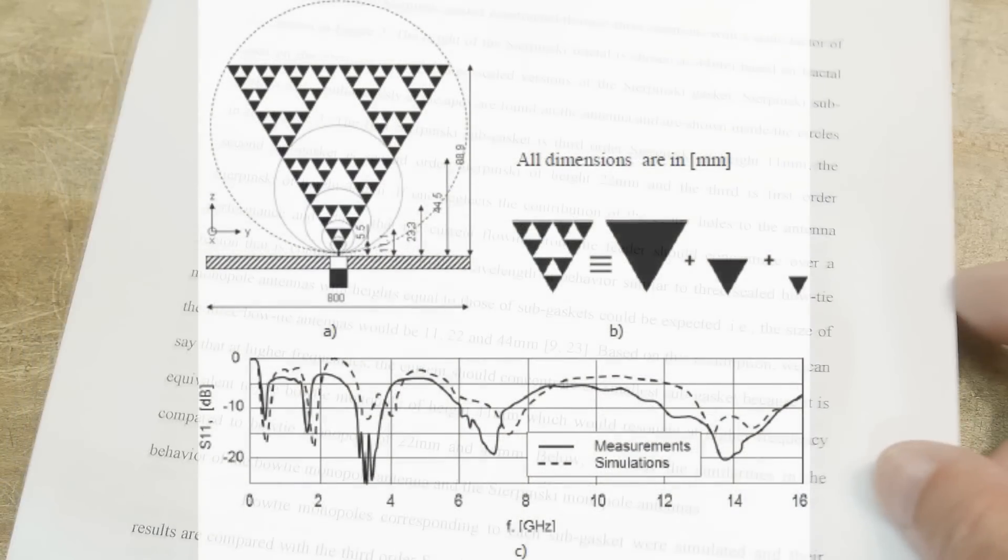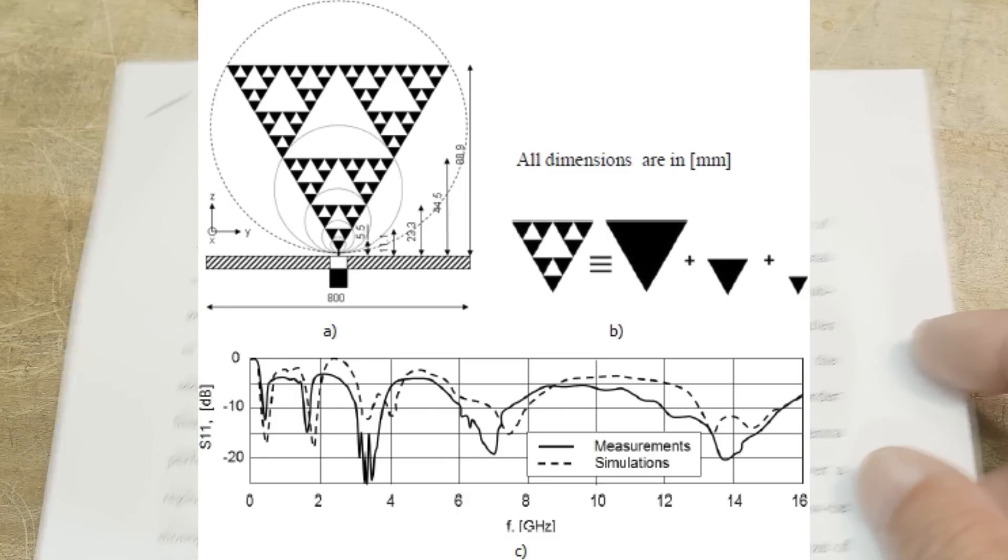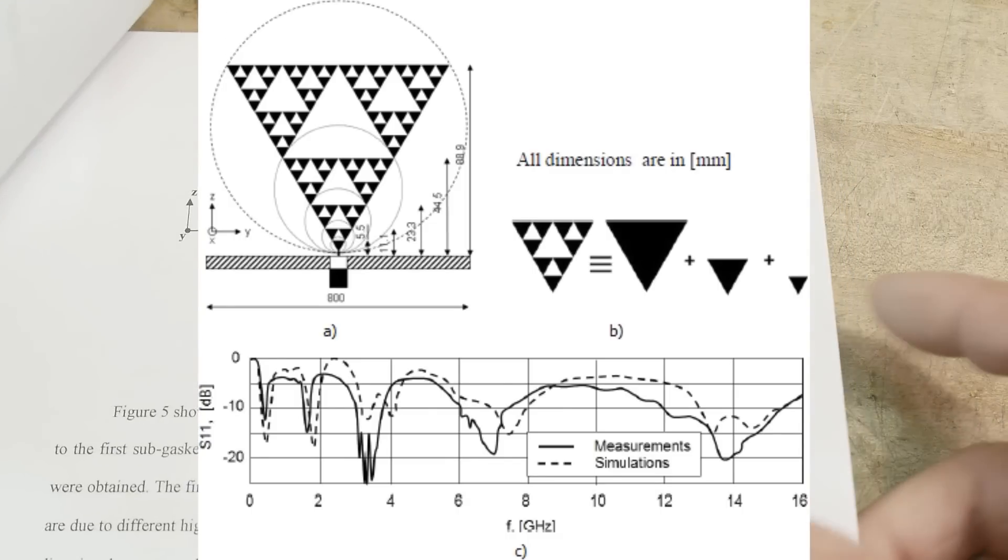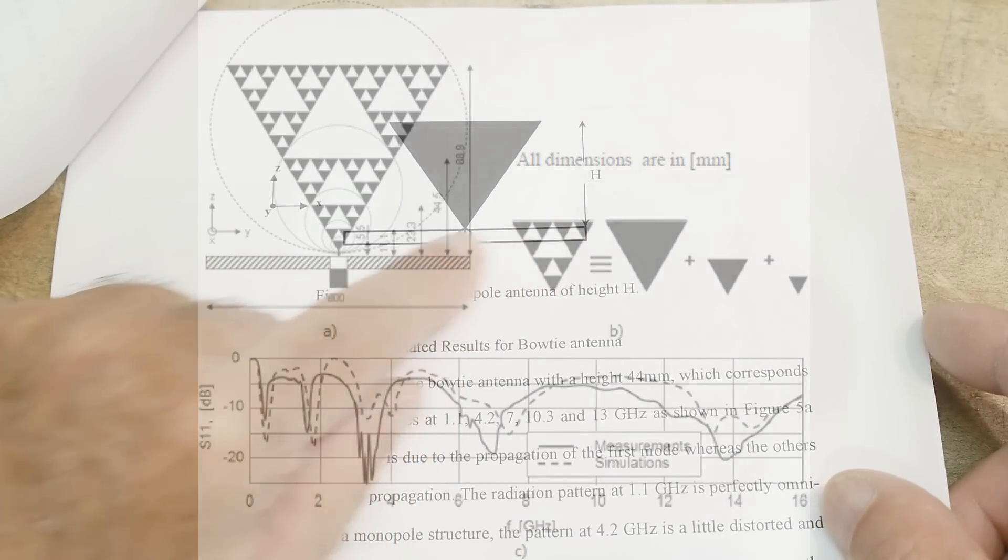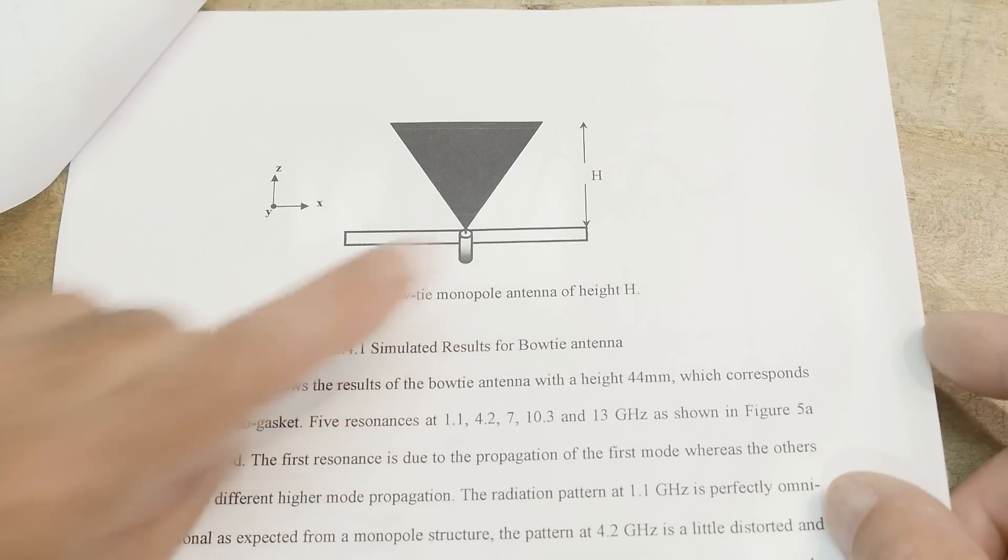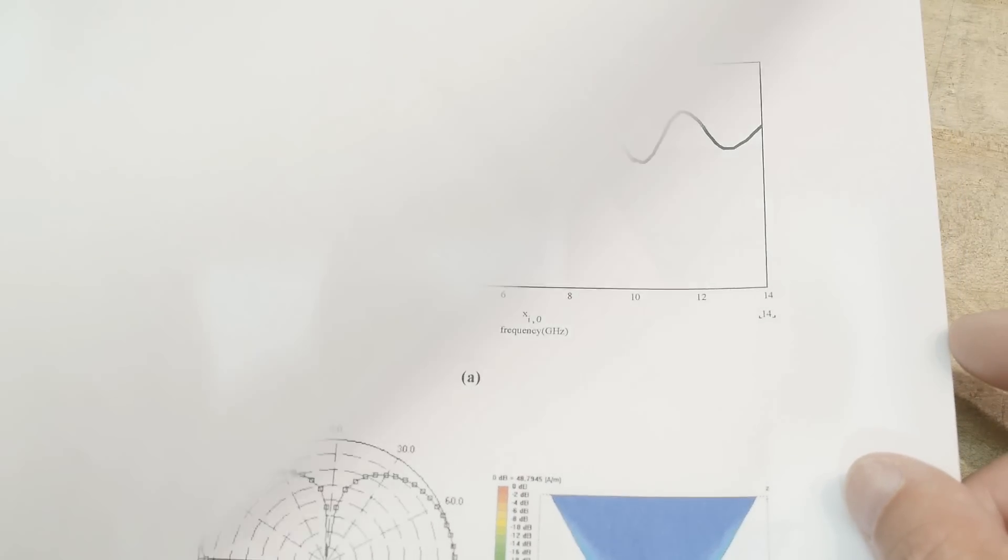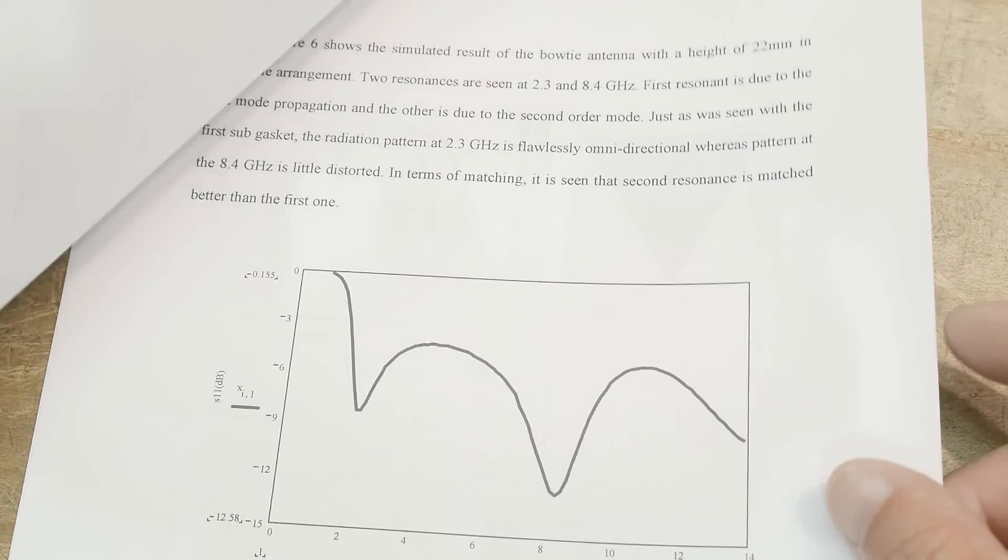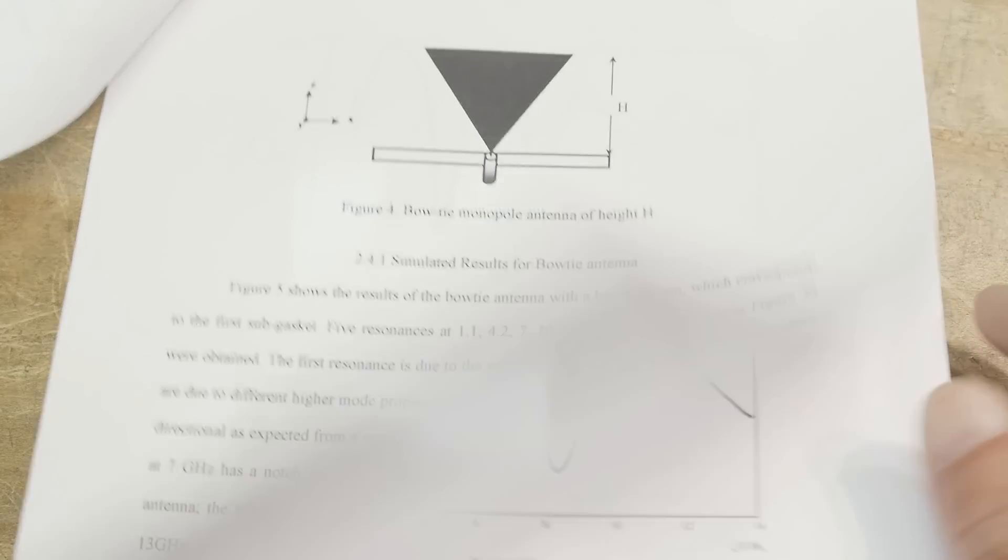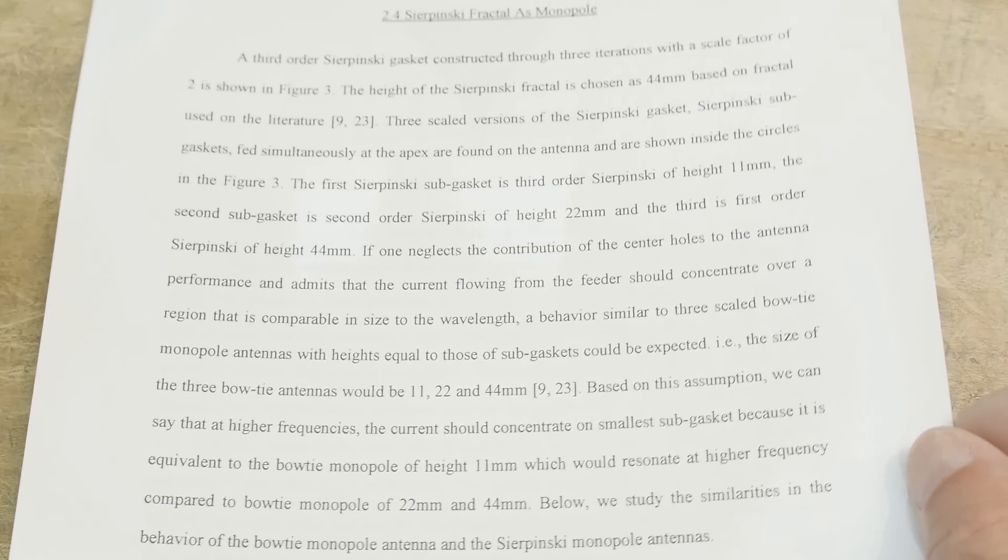Here is something I think I got out of somebody's thesis, a master's degree thesis. Sierpinski fractal as a monopole. You can think of it this way: there's a reflector and then there's this triangle-shaped thing above. It's a lot like a bow tie antenna.